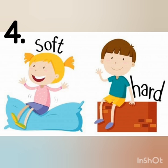Number four is soft and the opposite of soft is hard. You can see in the picture that the girl is sitting on a pillow and enjoying, but the boy is sitting on the wall and the wall is hard. So you can easily make out the pillow is soft and the wall is hard. The opposite of hard is soft.